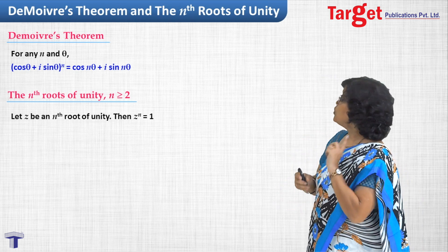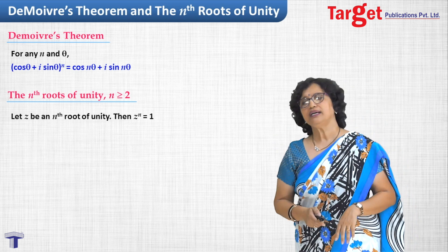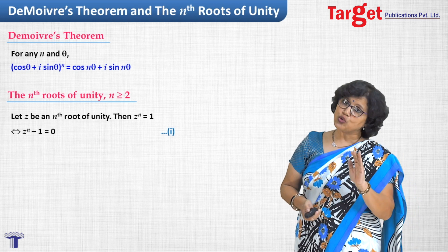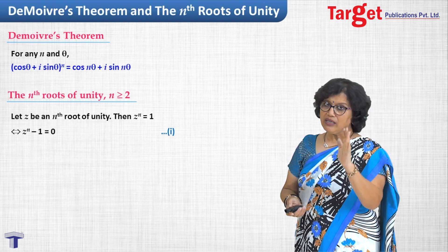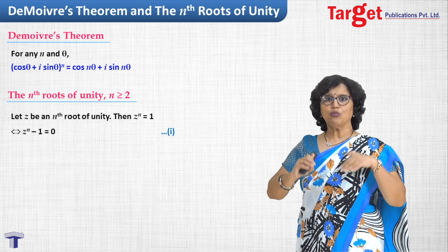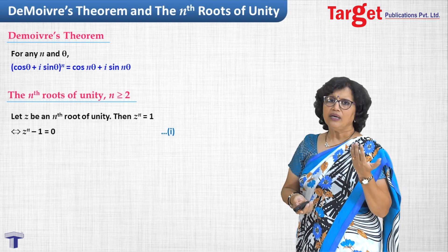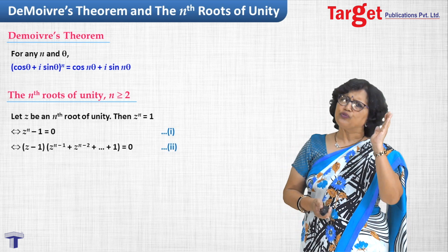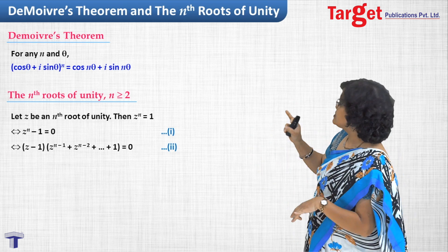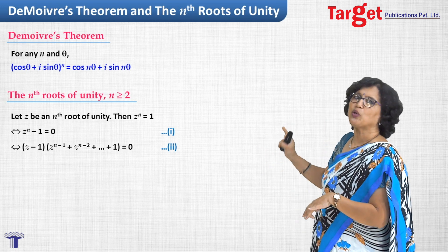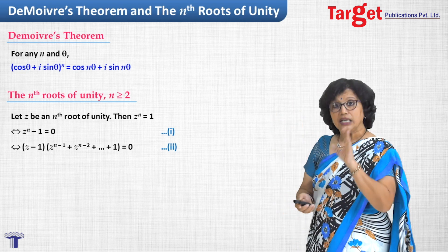If z is an nth root of unity, then z^n = 1, or equivalently z^n - 1 = 0. The moment you see z^n - 1 = 0, understand it as a polynomial equation. With polynomial equations, factorization theorem and further factors come automatically. So I factorize z^n - 1 as (z - 1) times (z^(n-1) + z^(n-2) + ... + 1). This second equation, rewritten from equation 1, is also important.